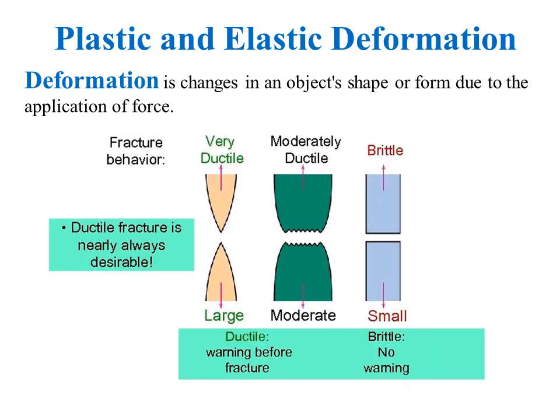Ductile materials undergo plastic deformation, which requires high energy, and therefore the material undergoes necking before breaking. Moderately ductile materials undergo little plastic deformation and then break in a brittle manner. Brittle fracture is a low energy process — the material breaks at low stress without any plastic deformation, giving a shiny and smooth fracture surface.